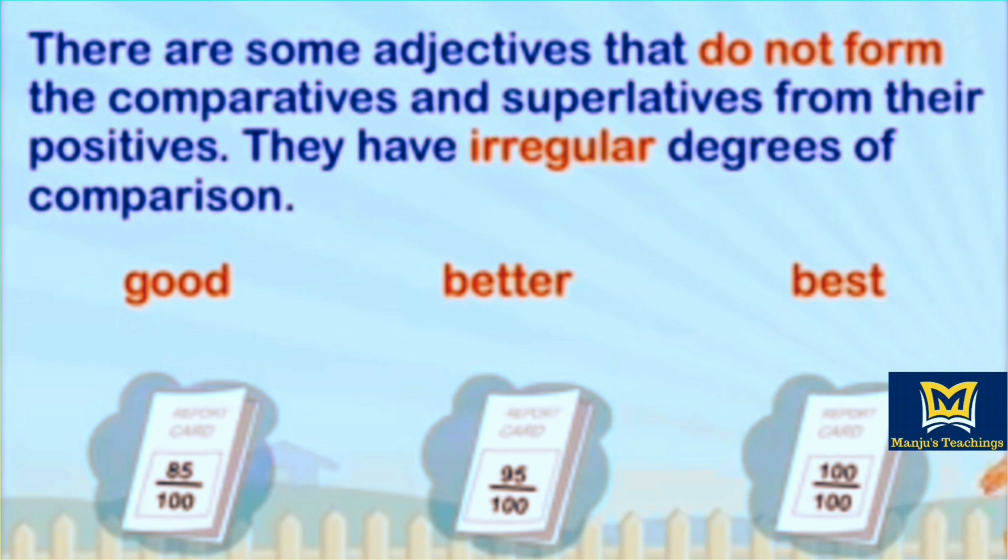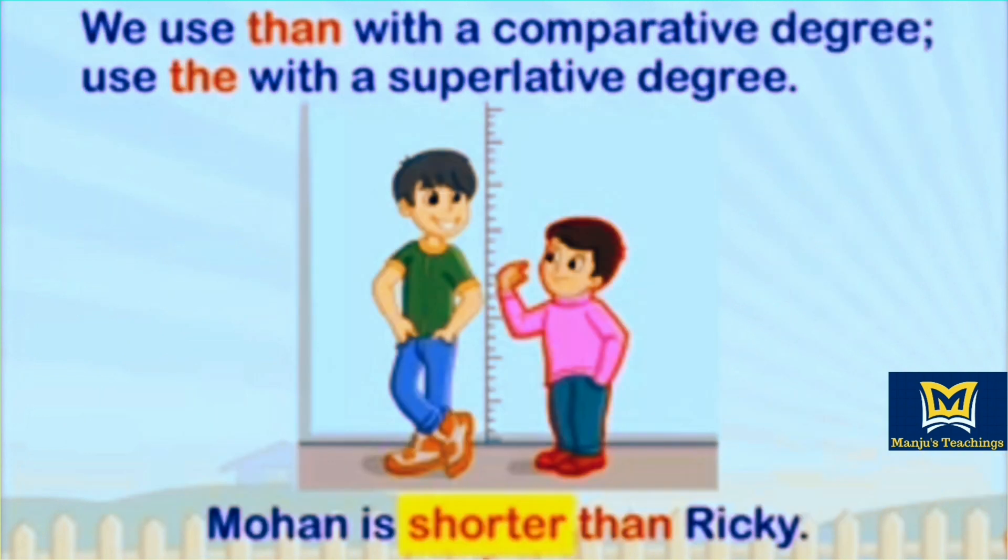There are some adjectives that do not form the comparatives and superlatives from their positives. They are irregular degrees of comparison. Example: good, better, best.